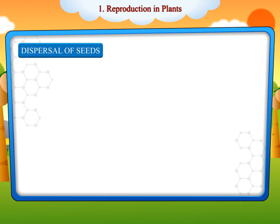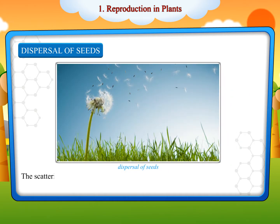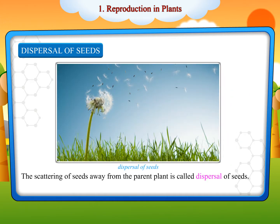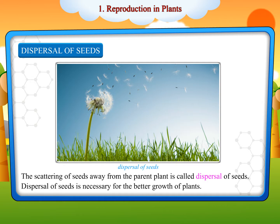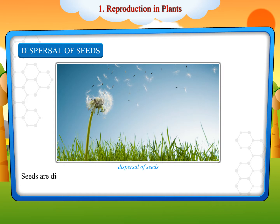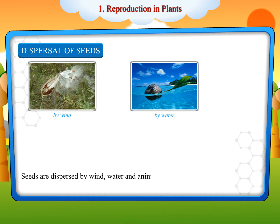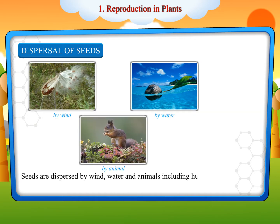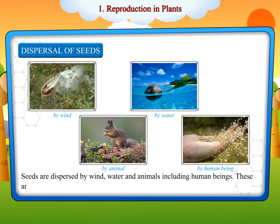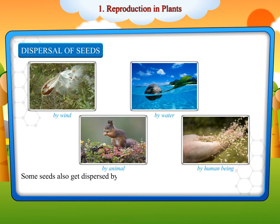Dispersal of Seeds: The scattering of seeds away from the parent plant is called dispersal of seeds. Dispersal of seeds is necessary for the better growth of plants. Seeds are dispersed by wind, water and animals including human beings. These are called the agents of dispersal. Some seeds also get dispersed by explosion of fruits.